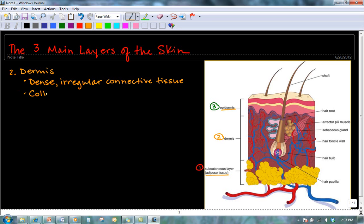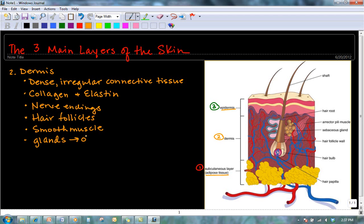It contains collagen and elastin. But other things that are present in the dermis include nerve endings, hair follicles, smooth muscle, glands, mostly oil glands and sweat glands, and also lymph vessels.